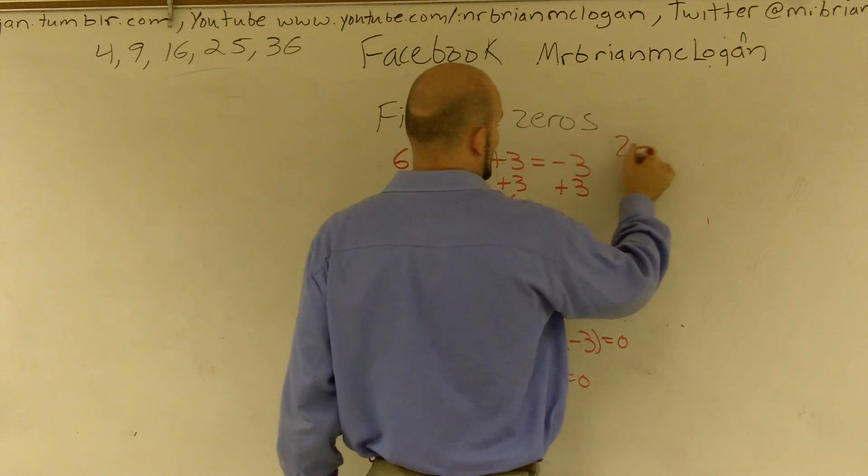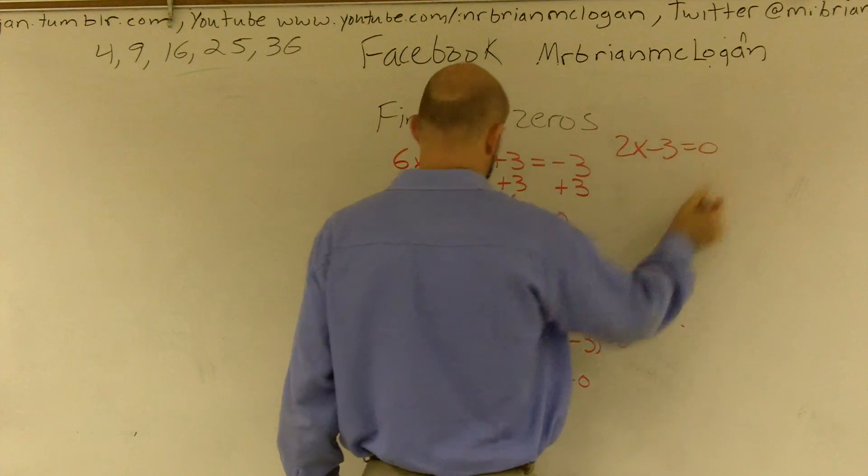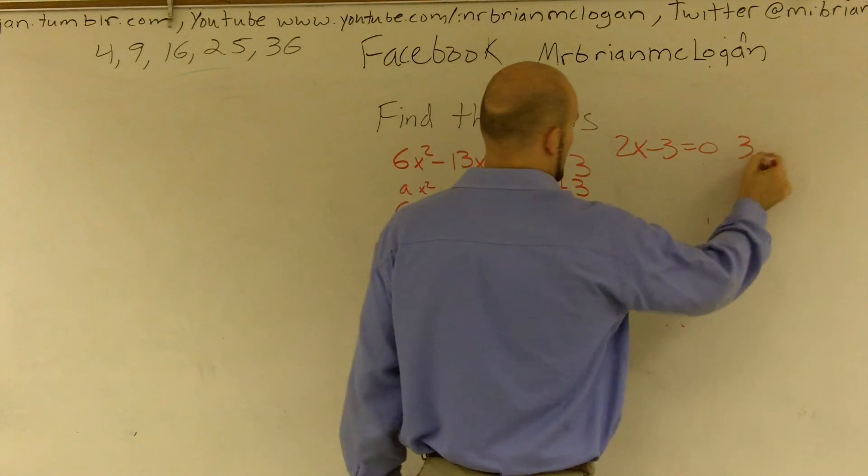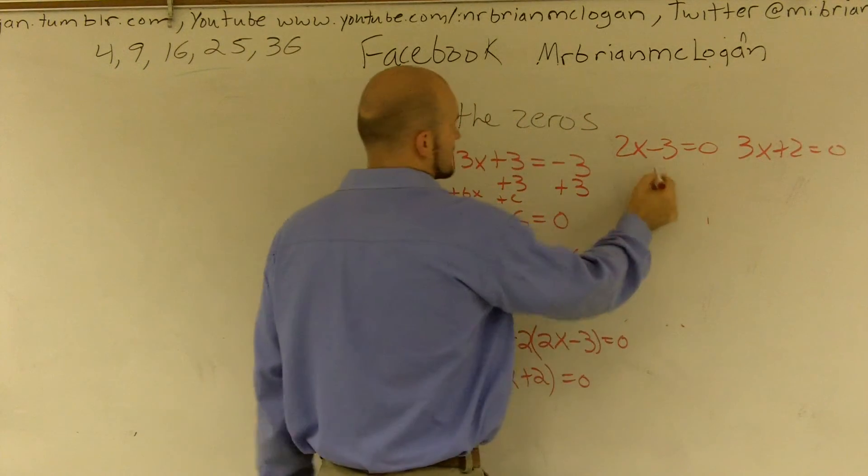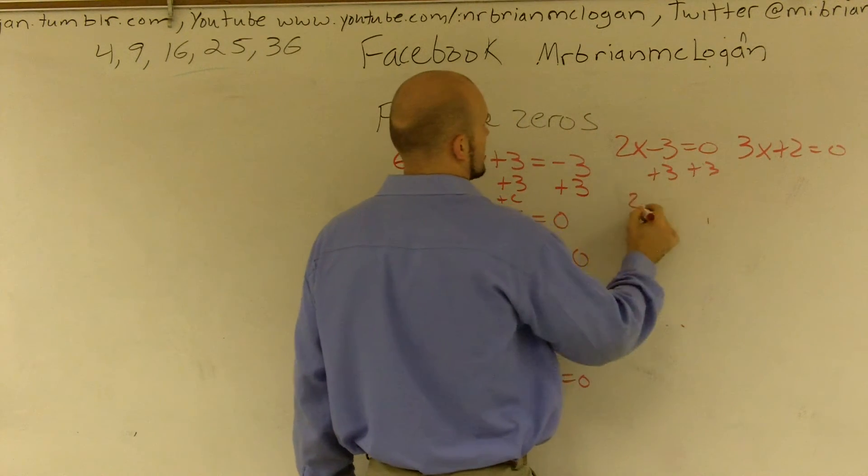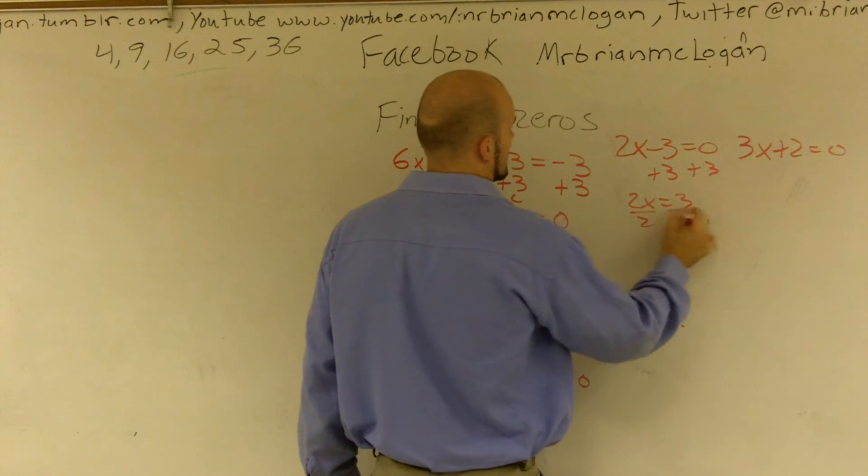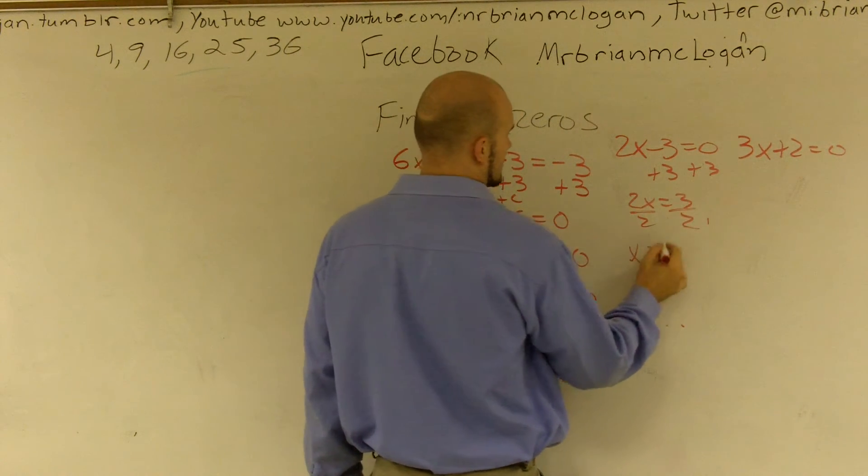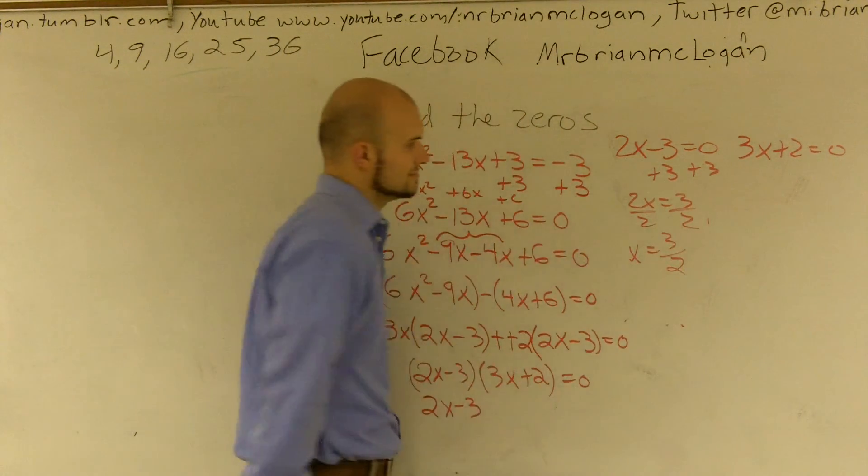Therefore, I have 2x minus 3 equals 0, and 3x plus 2 equals 0. Add 3. Divide by 2. x equals 3 halves.